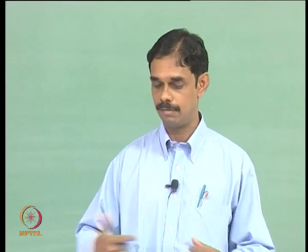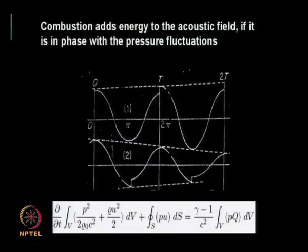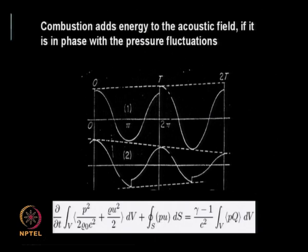If combustion oscillations are out of phase with the acoustic field, you have damping — the combustion will take away acoustic energy. This is called the Rayleigh criteria, expressed mathematically: the rate of change of acoustic energy is proportional to the correlation between the acoustic pressure and heat release, minus the losses. We will derive this in subsequent lectures in detail. If heat is added in phase with the acoustic field, oscillations will grow; if out of phase, oscillations will decay.